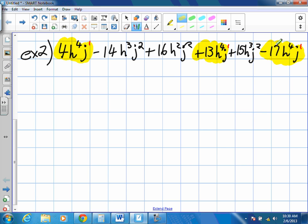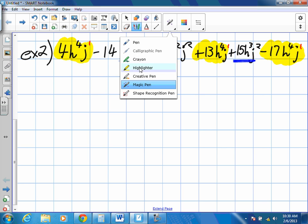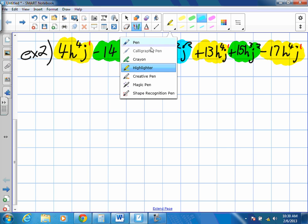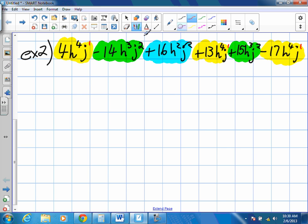Using that same rule, h to the power of 3, j2, what other number works with that? Right there, 15h. So we have negative 14h cubed j squared plus 15h cubed j squared. And finally, this term, again, there are no other like variables, so there's nothing to combine in that question. So we're going to put these three together.